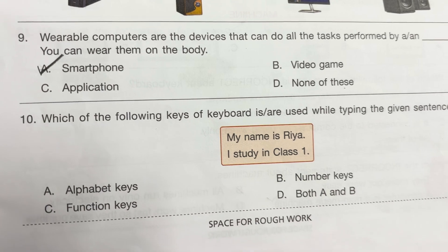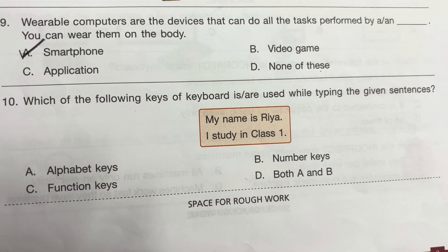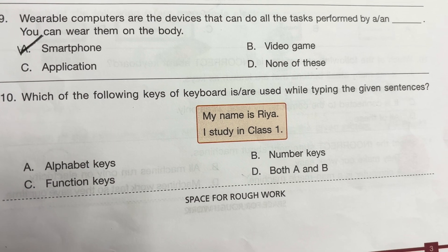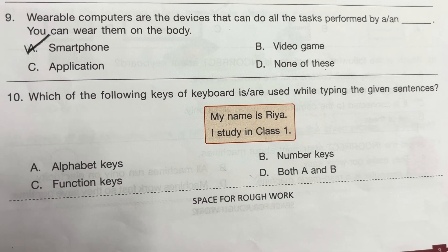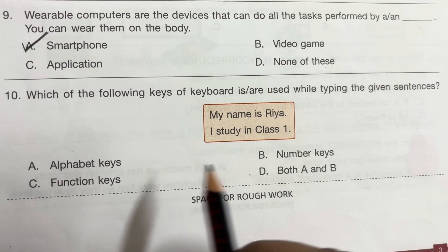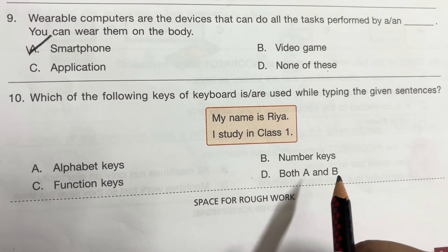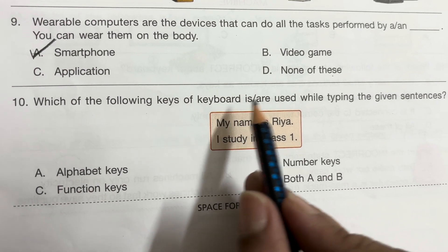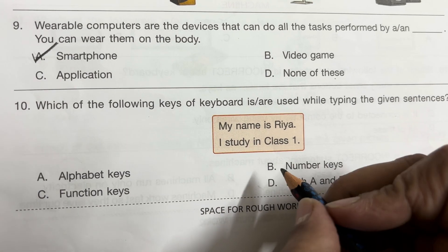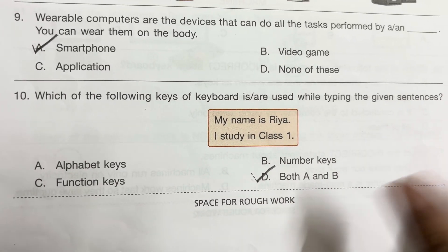Question 10: Which of the following keys of a keyboard are used for typing the sentence 'My name is Rhea. I study in class 1'? Options: alphabet keys, number keys, function keys, both A and B. For writing this, both alphabet keys and number keys are used. So answer is D — both A and B.